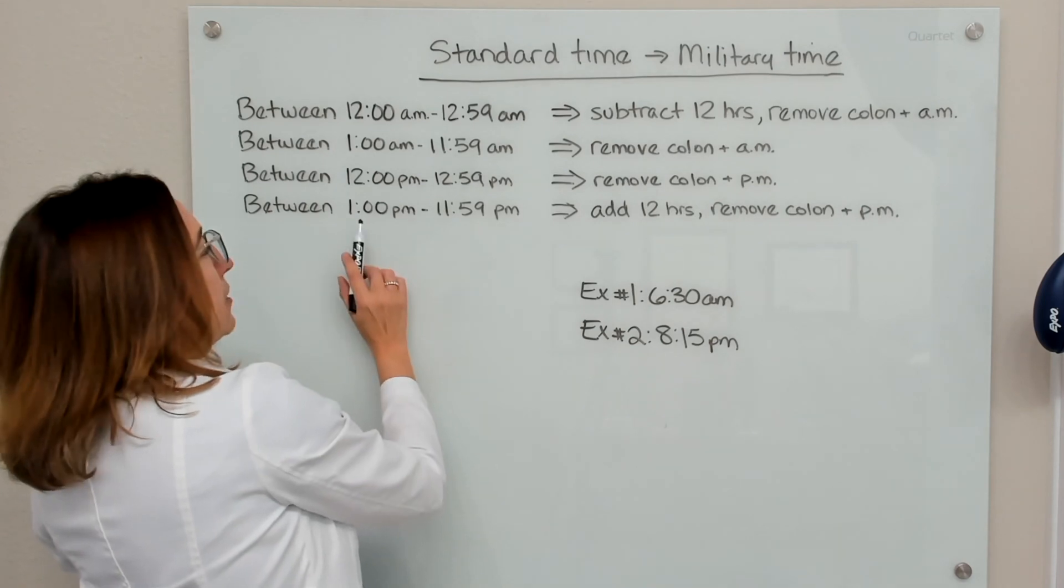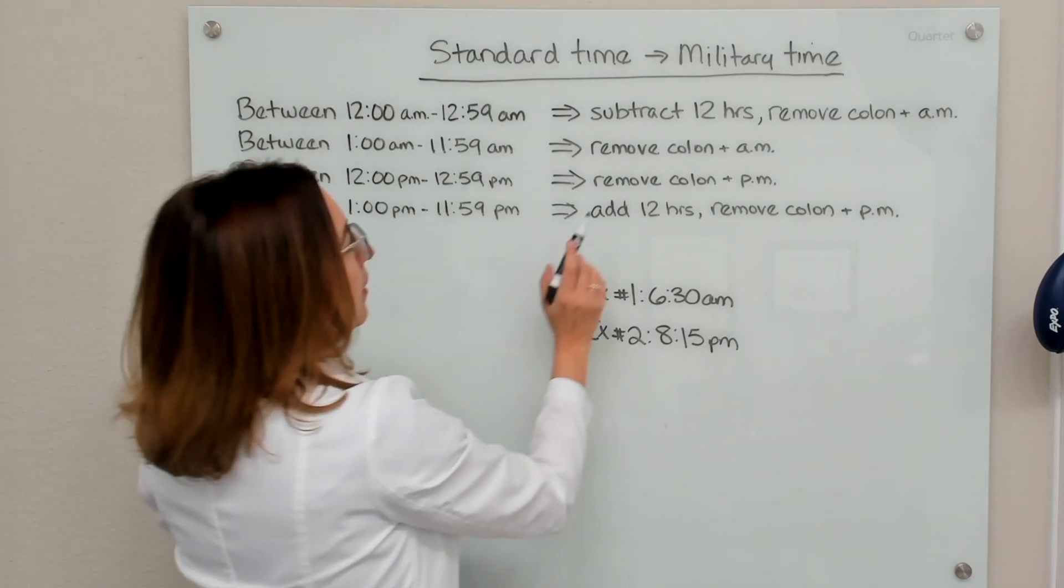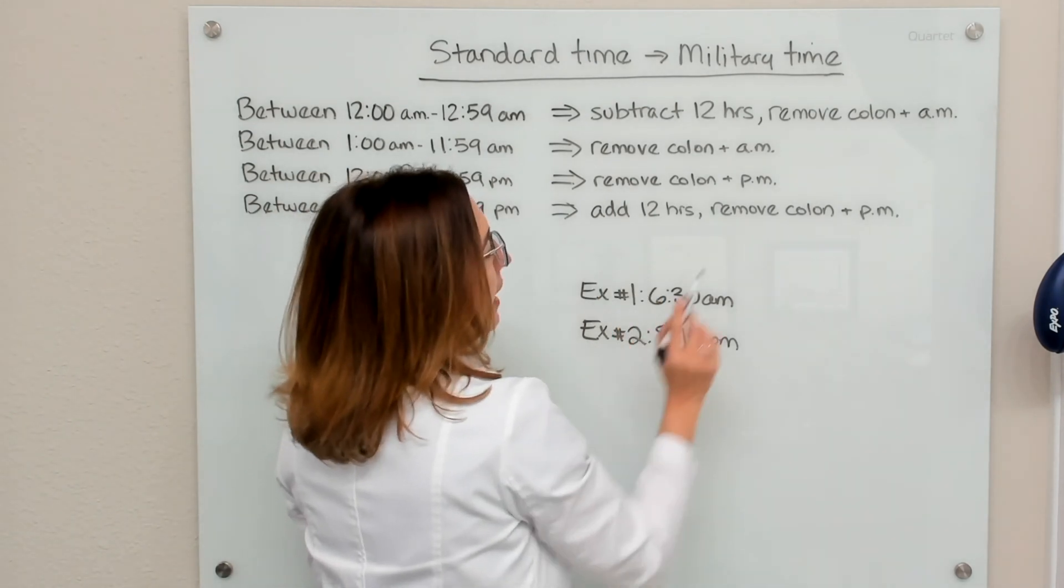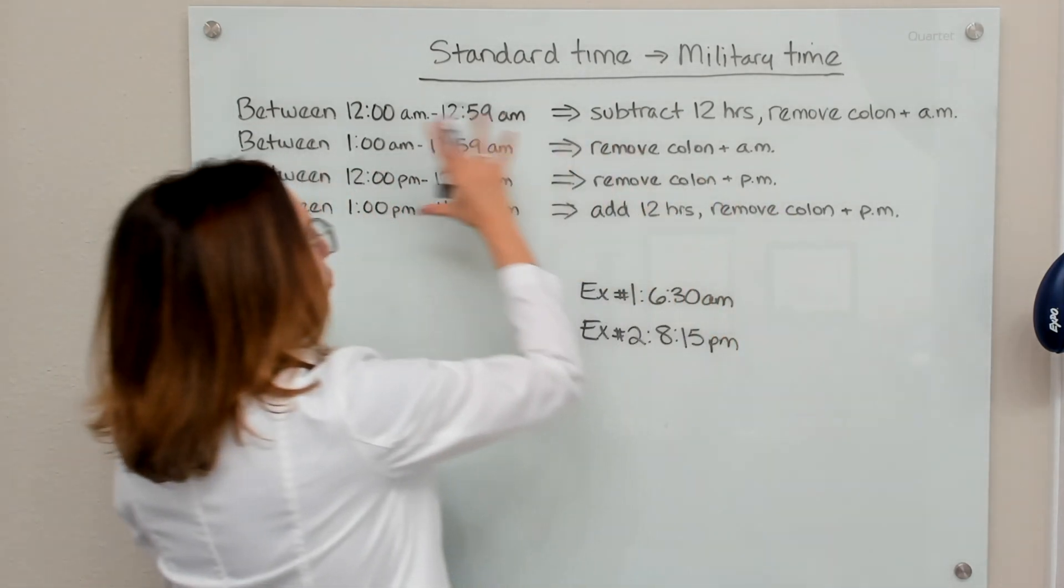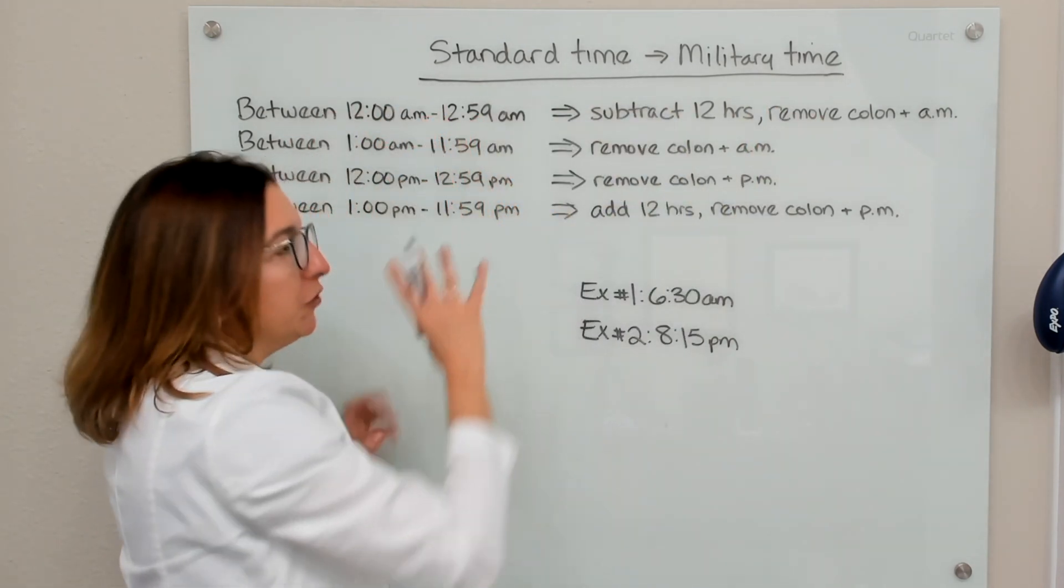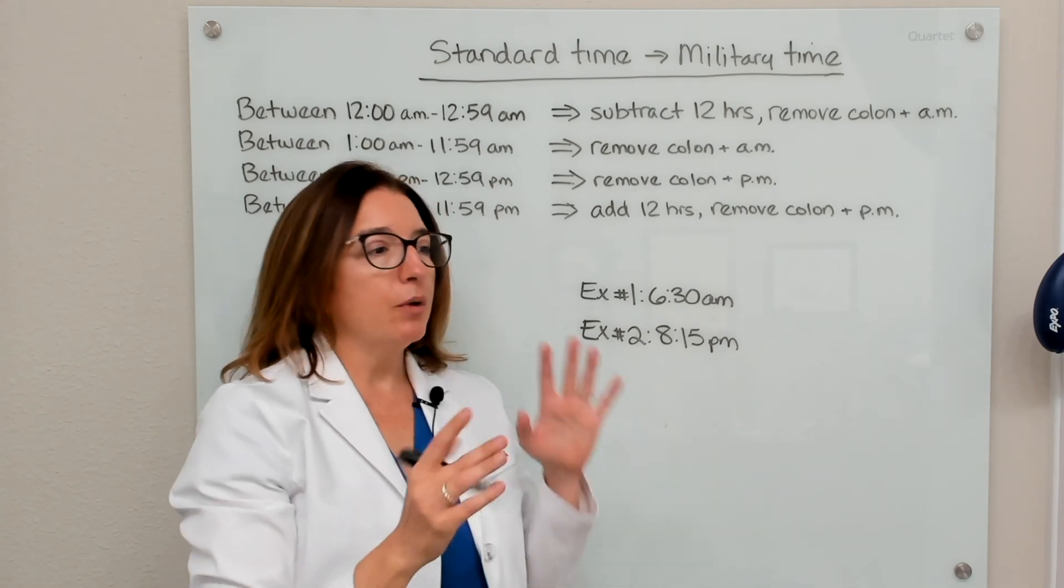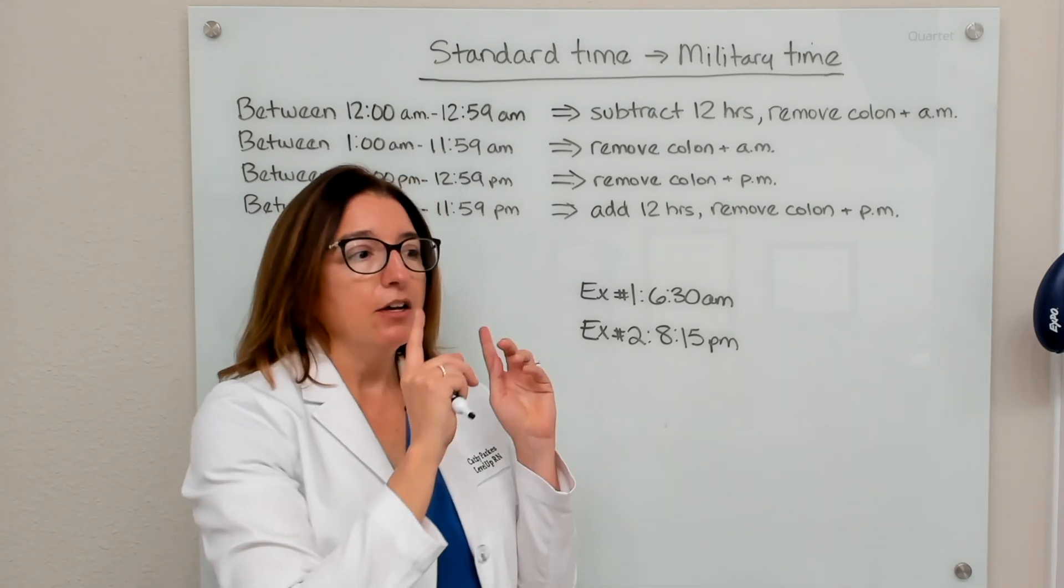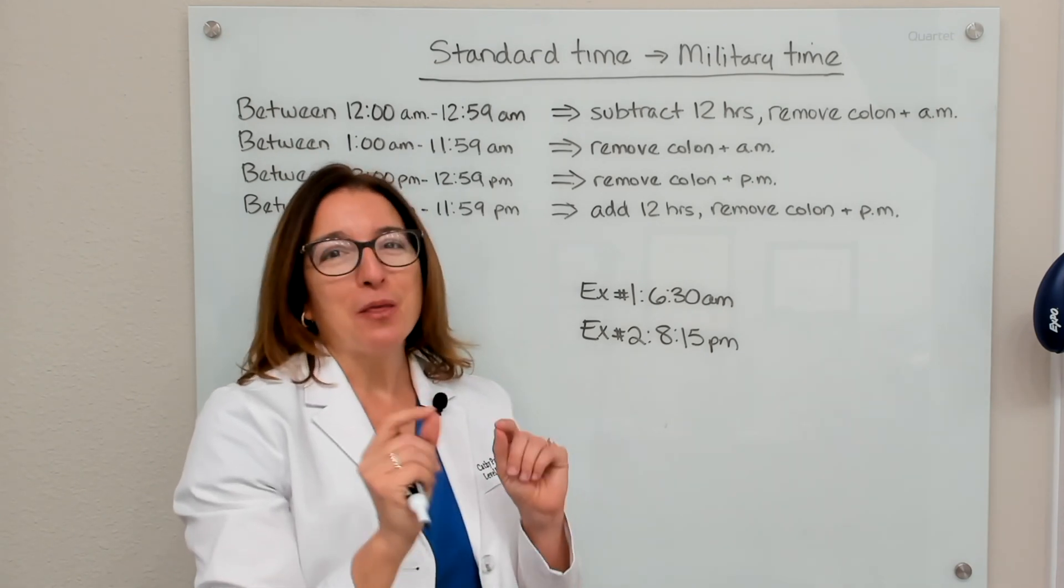And then finally, if you have a standard time between 1 p.m. and 11:59 p.m., you need to add 12 hours and then remove the colon and p.m. And no matter which of these things you follow, you need to make sure when you're doing military time that we have four digits: two digits for the hour and two digits for the minutes.